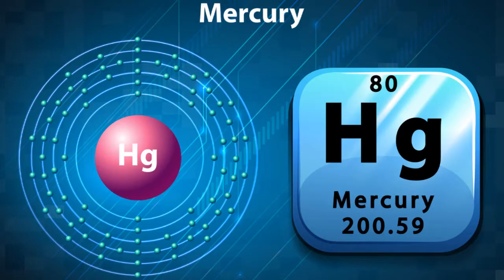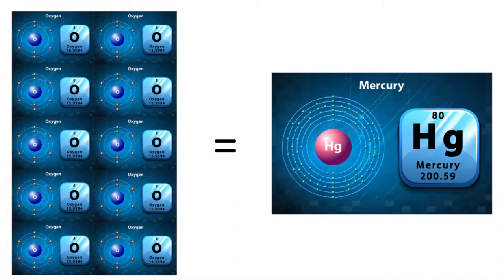Mercury has the atomic number 80. That means that there are 80 protons and 160 neutrons in the nucleus and 80 electrons orbiting around it in the shell. So we can see that the 10 oxygen atoms on the left side of the equation are, in terms of the form and number of the building blocks, identical to the form and number of the building blocks in a single mercury atom on the right side.